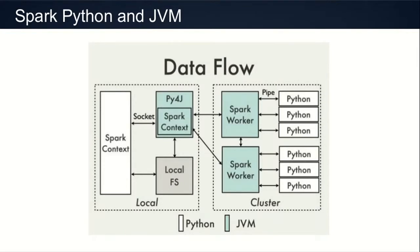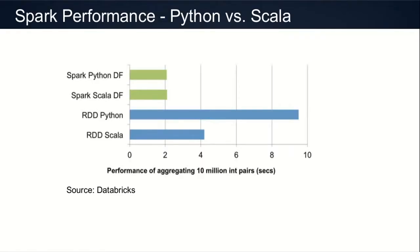On the left side you have the driver, and on the other side different workers communicating between Python and the Spark worker using piping. It's not that bad in terms of performance because of the new high-level API that Spark released. Originally the way to work with Spark was using RDD — Resilient Distributed Datasets — a low-level object you can use in Python or Scala, but as you can see in the graph, there's a big performance penalty for Python. On the other hand, if you use DataFrame, a higher-level API, when using Python it's not that bad. DataFrame also lets you use SQL-like language to access the data.